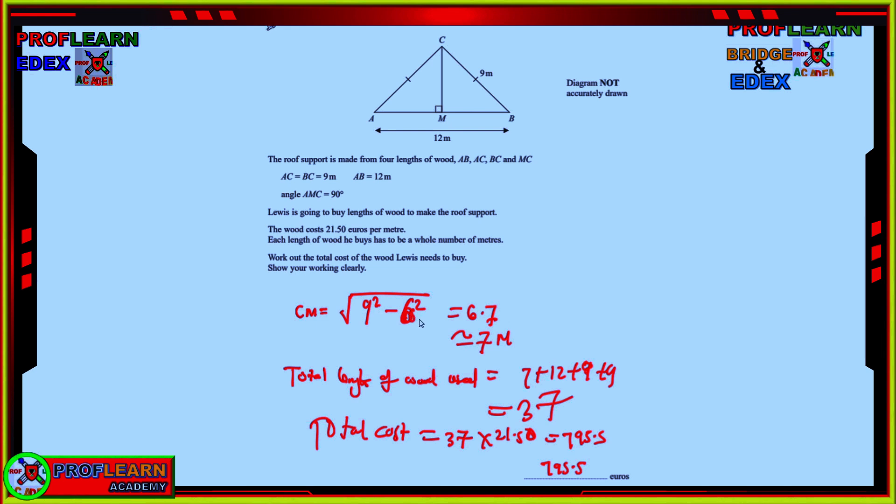So, CM is 9 squared minus 6 squared. Where is 6 squared coming from? A half of AB is 6. So, 9 squared minus 6 squared, you find the square root will give you CM. Then you work out the total length, 12 plus 9 plus this 9, and then we are going to add also height with approximately 7. So, the total length becomes 37, but each meter was costing 21.5, so meaning the total cost is going to be 37 times 21.5, which translates to 795.5 euros.